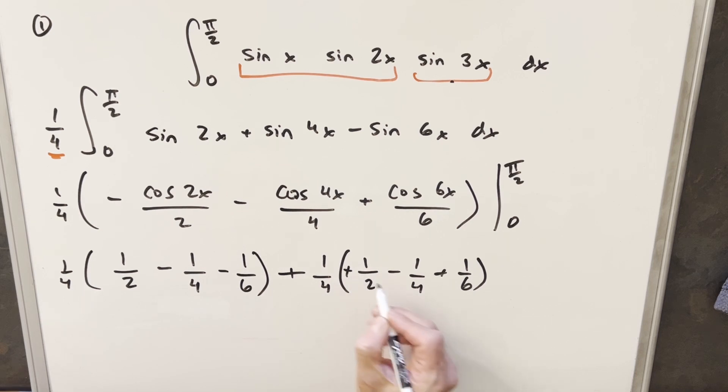And I think I'll use this minus to just change the sign and everything, try to make the simplification a little bit easier for me. I'll factor 1 over 4 out. Half plus half is 1 here. 1 fourth minus 1 fourth is a 0 here. Minus a 6 minus a 6 is going to be minus a 1 third. 1 minus 1 third is going to be 2 thirds. So 1 fourth times 2 thirds is going to give me my final solution of just 1 over 6.